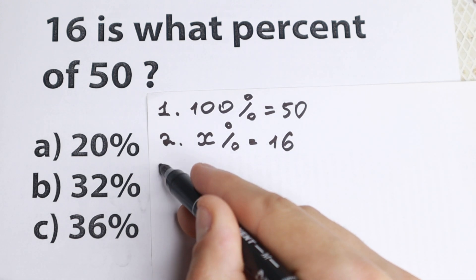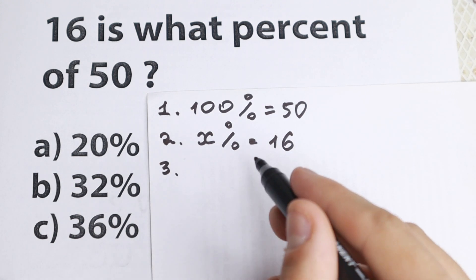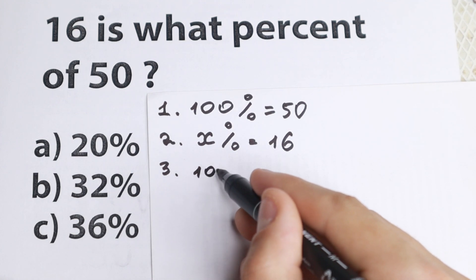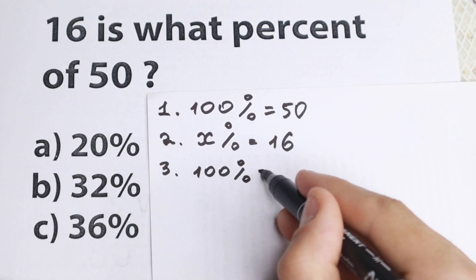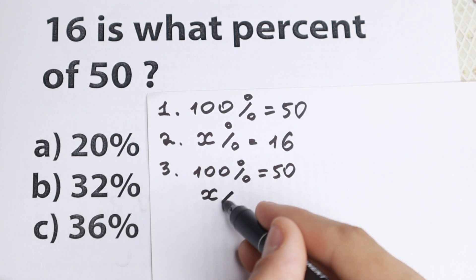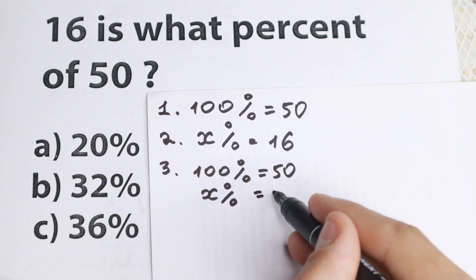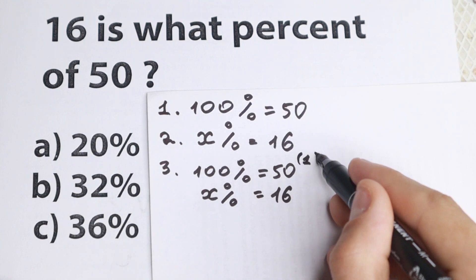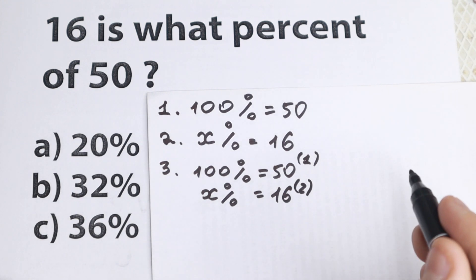Okay, the next step, the third step. This gives us a pair of simple equations. So the first equation 100% equal to 50 and on the bottom of it I write x percent equal to 16. So we have this, this is our first equation, this is our second equation. We have two equations.